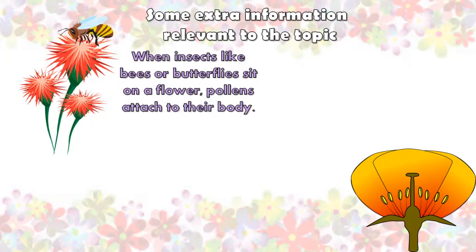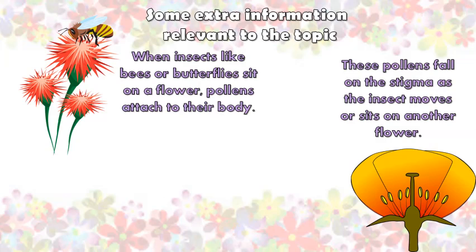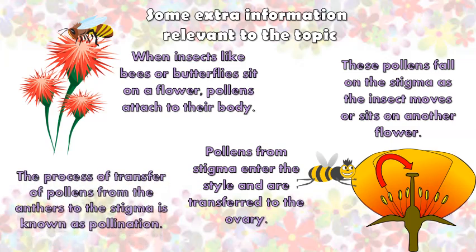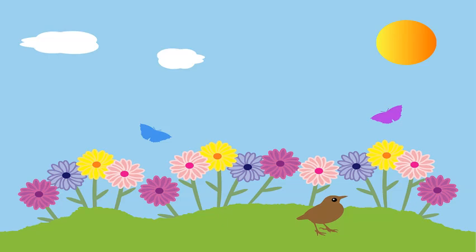When insects like bees or butterflies sit on a flower, pollens attach to their body. These pollens fall on the stigma as the insect moves or sits on another flower. Pollens from the stigma enter the style and are transferred to the ovary. The process of transfer of pollens from the anthers to the stigma is known as pollination.